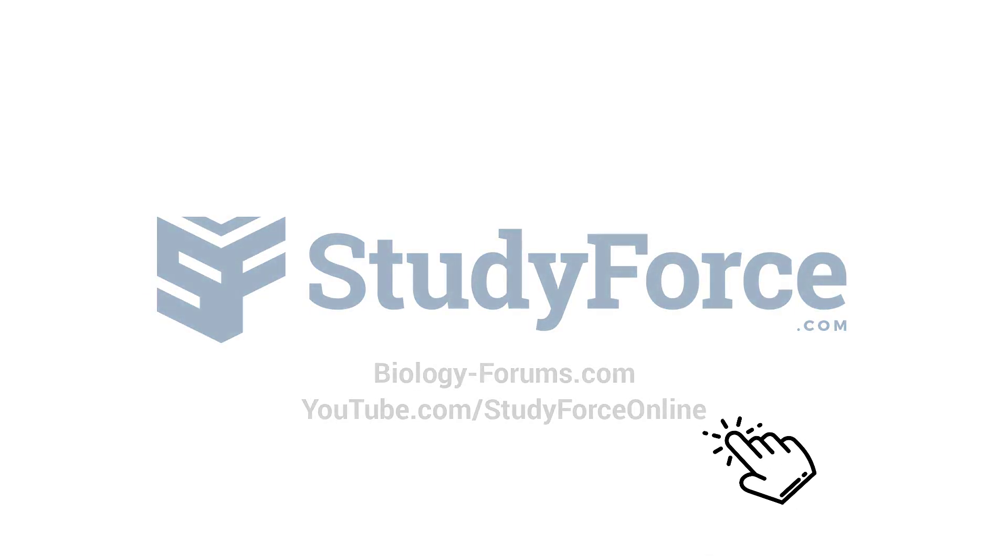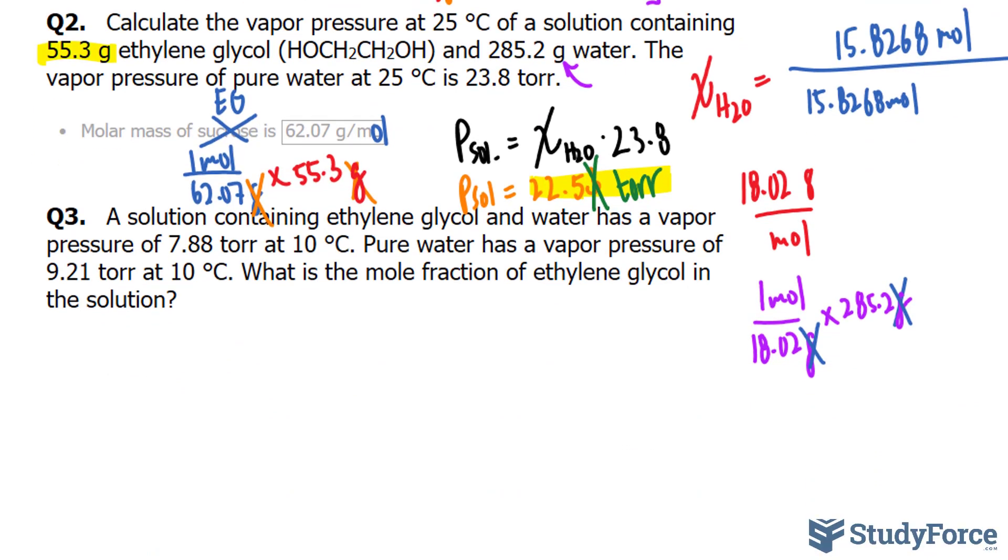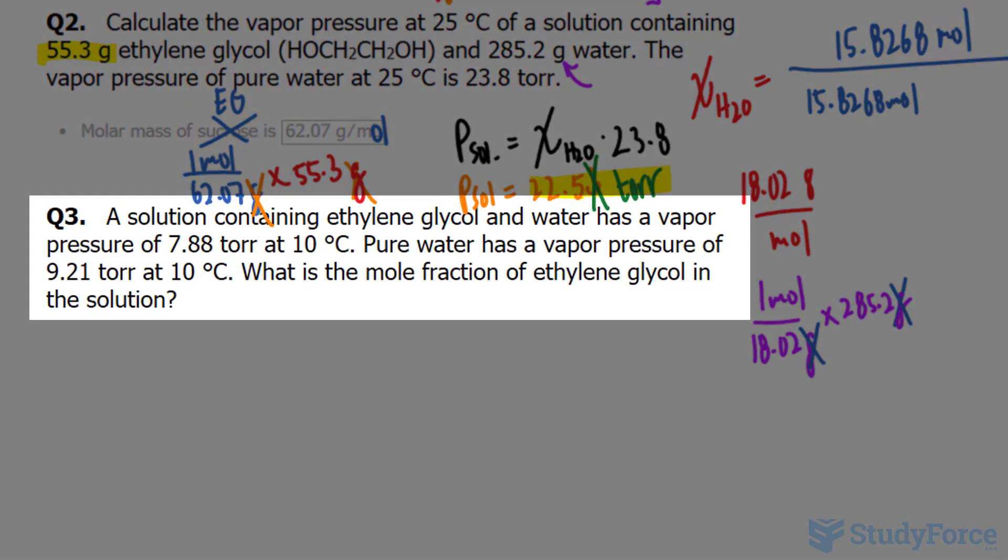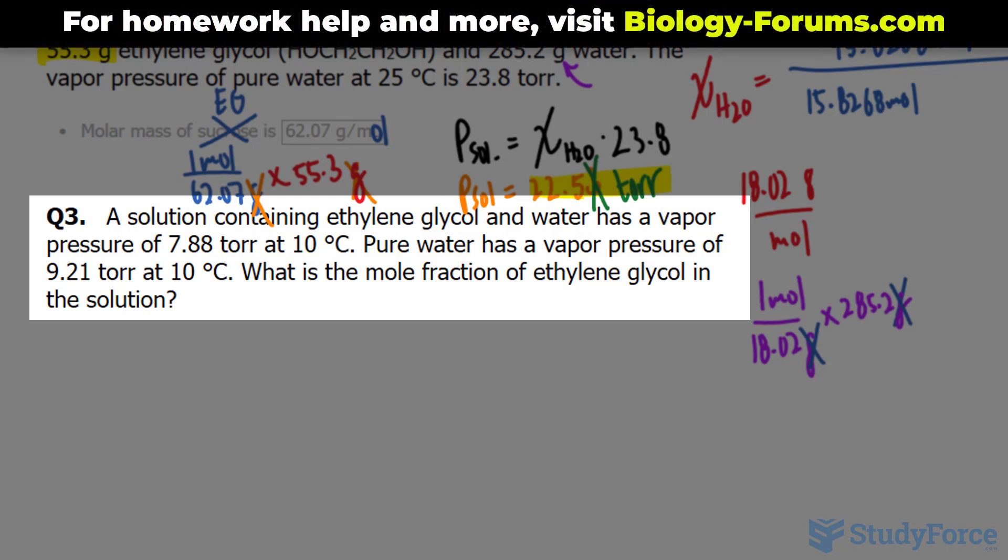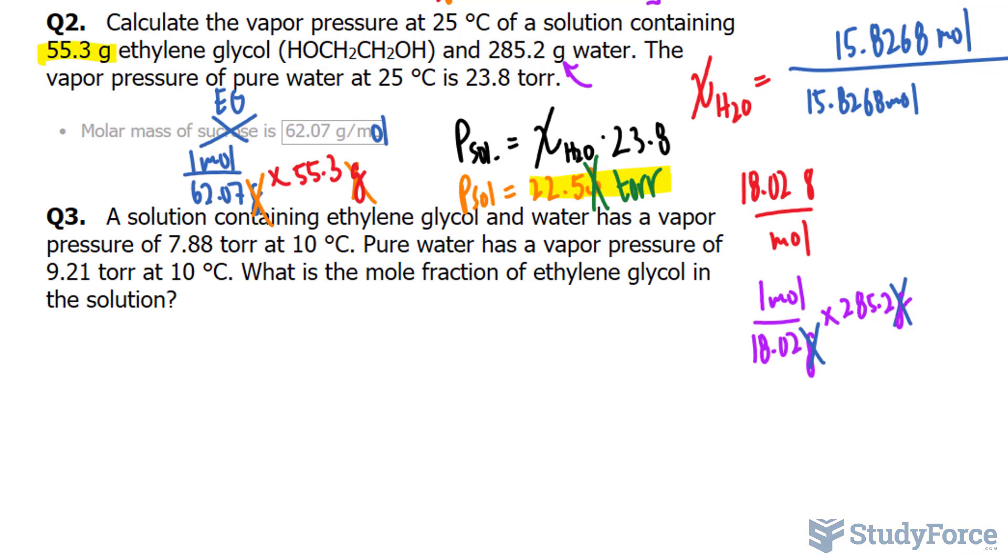Welcome back to the final part of this series where we calculate the vapor pressure of a solution. We ended off with question number three which reads, a solution containing ethylene glycol in water has a vapor pressure of 7.88 Torr at 10 degrees Celsius. Pure water has a vapor pressure of 9.21 Torr at 10 degrees Celsius. What is the mole fraction of ethylene glycol in the solution?